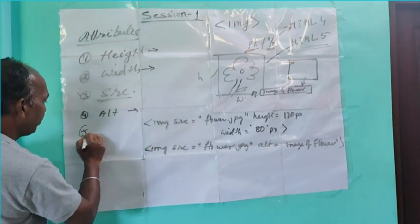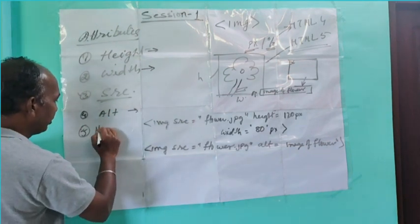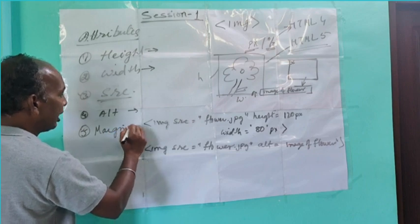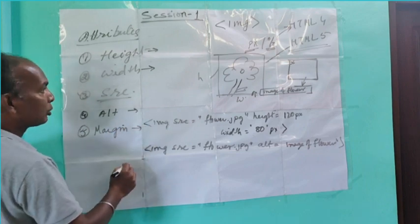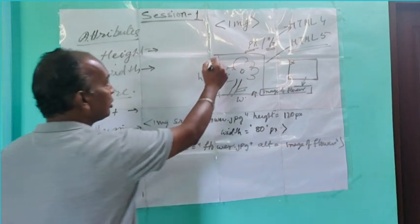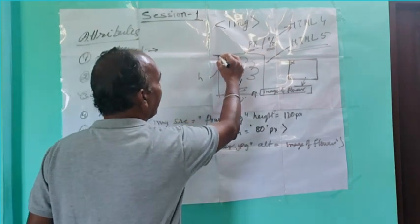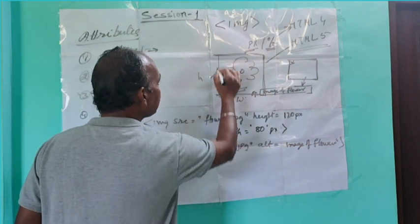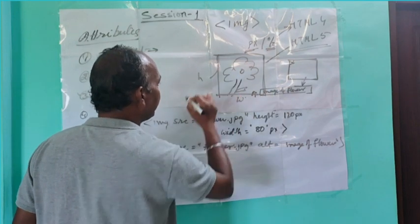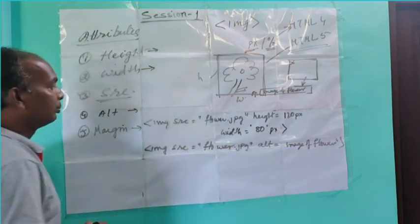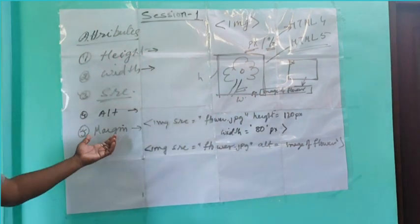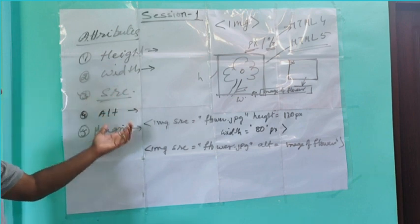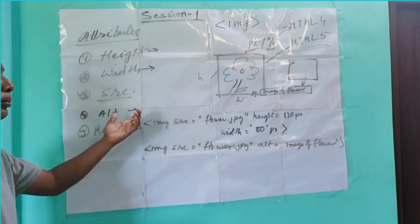The next attribute is margin. The margin tag is used to show the margin of the image. You can also use the value of margin in pixels.